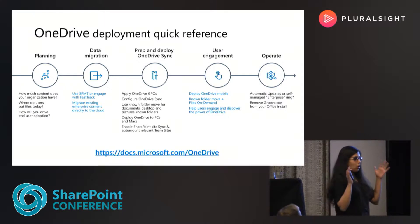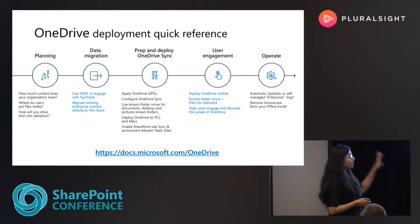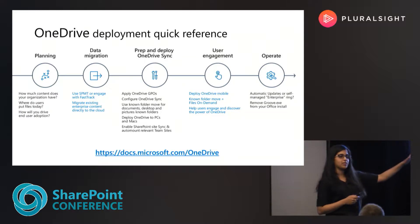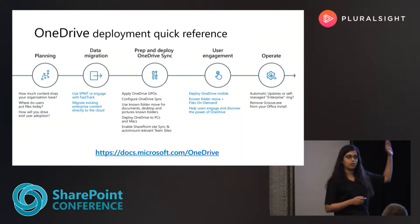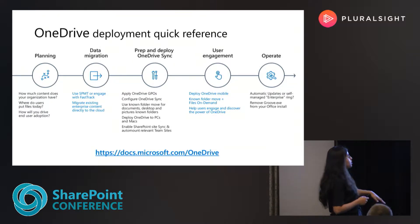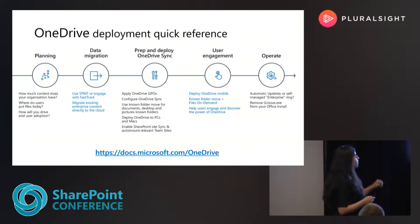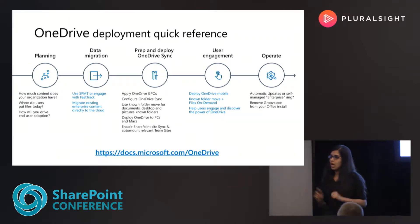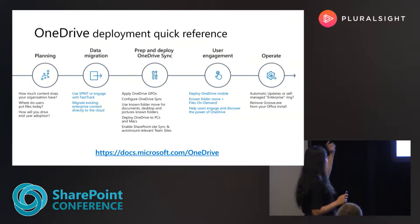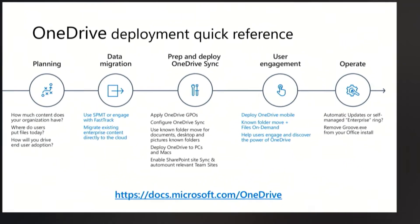To set up context for the journey of adoption, we'll spend a quick minute on the deployment journey as well. All the content across these five stages is available on docs.Microsoft.com — whether it is how to plan your data migration, how to do the data migration, deploying the OneDrive sync client, deploying a known folder move, figuring out user engagement, or making sure that the operation of the app is perfect. What I want to highlight here is the first part — the planning part — and the third question of how you will drive end user adoption.